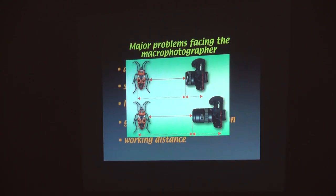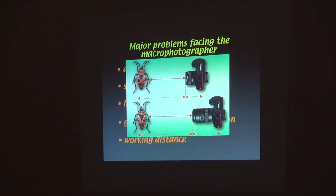Here's a 100mm macro lens. If you get the same size image, you're further away — the working distance is bigger. Is that good or bad? It's good because you don't have to get so close to something. That's why when you buy a macro lens, it'll say 50mm, 100mm, or 180mm. The longer the lens, the more expensive it gets because you're paying for that working distance.